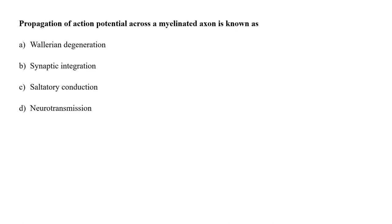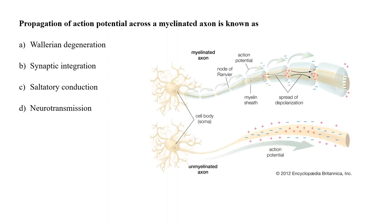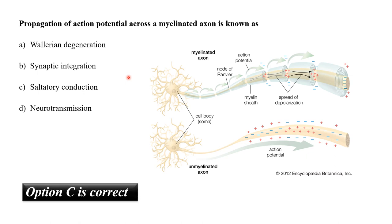Propagation of action potential across a myelinated axon is known as A. Wallerian degeneration, B. Synaptic integration, C. Saltatory conduction, or D. Neurotransmission? In a myelinated axon, the action potential travels from one node of Ranvier to another in a constant jump. This process is called saltatory conduction. A non-myelinated axon has direct transmission. So the correct answer is option C, saltatory conduction.